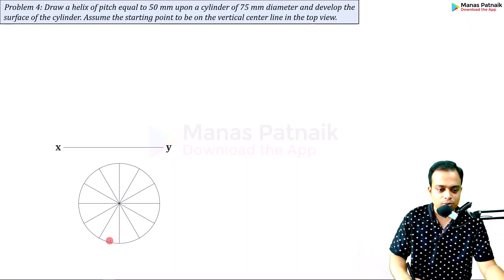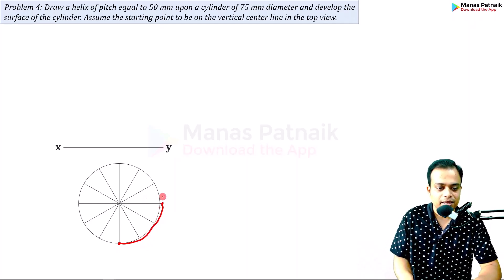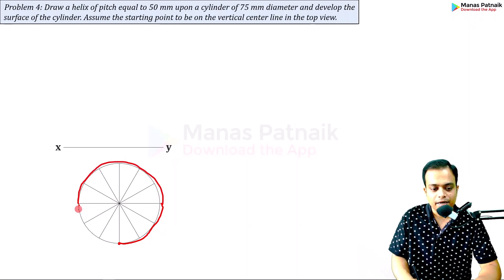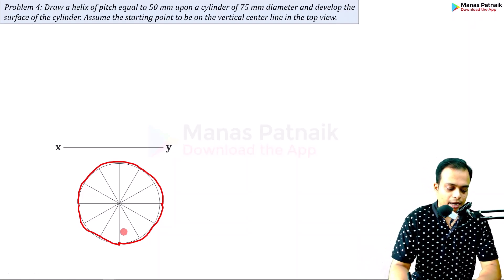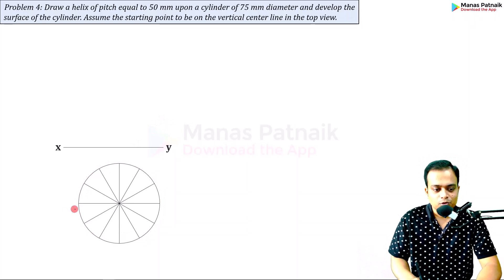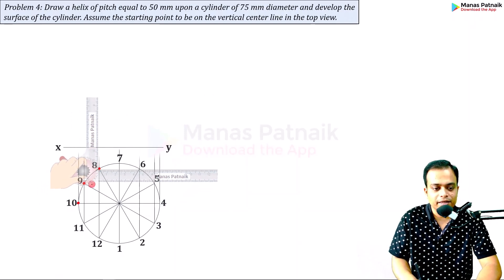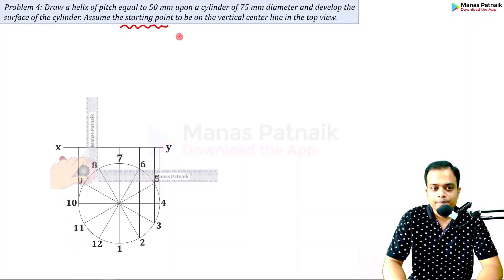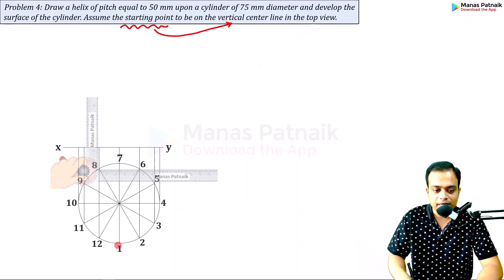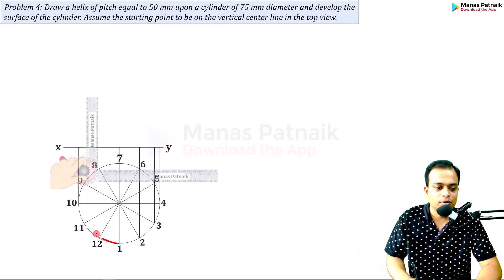The helix begins at the front portion, gaining height simultaneously, then goes around the cylinder to the back portion, and then comes to the front again. In that process it has gone for one revolution and made some axial advance — that is what you call the pitch. To make the front view, keep your drafter here and draw lines accordingly. We start numbering from one at the vertical center line and go anti-clockwise. You can make a clockwise helix also — no problem.